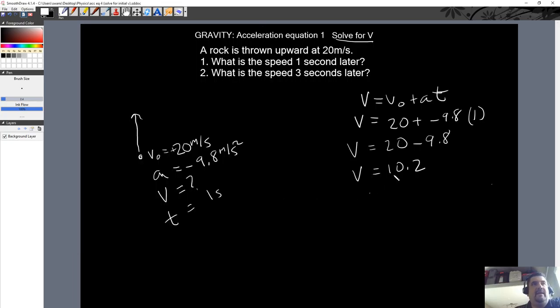So that being said, 10.2 what, meters per second? And by the way, is this positive or negative? It's positive. Right? I mean, there's a positive 20 minus 9.8. So it's still positive.